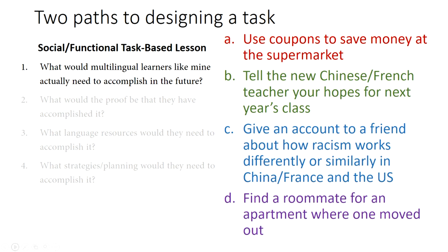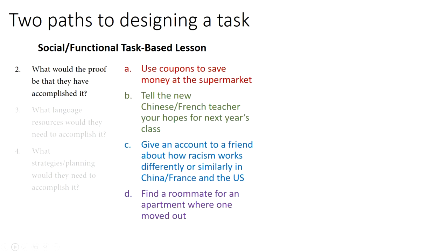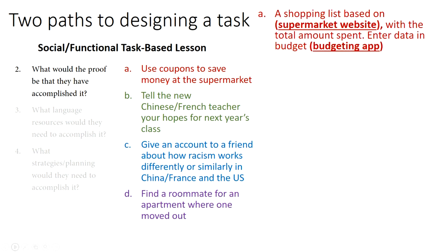These are all things I could imagine learners needing to do in the target language, so that's the first step — pick something like that. Then I move on to: what's the proof? What would be the moment where you know they've accomplished this? If the task is to use coupons, maybe a shopping list based on a website with the total amount spent.